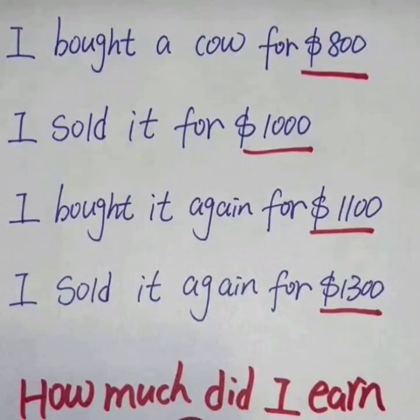All right, good day. So there's this riddle going around online: buying a car for $800 and selling it for $1,000, then buying it again for $1,100 and selling it again for $1,300. So they want to know how much did the person earn. Some people are saying $300, some are saying $400, some are saying $200, and some are even saying $100.